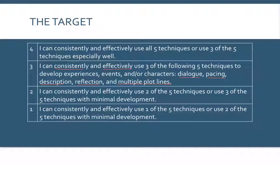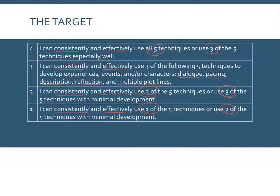At the two level, you can consistently and effectively use two, or you can use three but with minimal development. At the one level, you consistently and effectively use one, or you use two with minimal development. At the four level, you can consistently and effectively use all five techniques, or the three that you choose are especially well-chosen or especially done well.